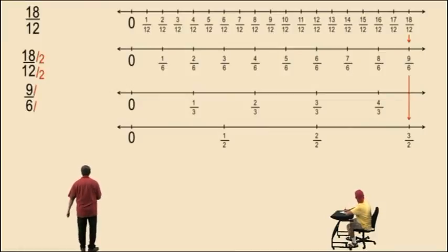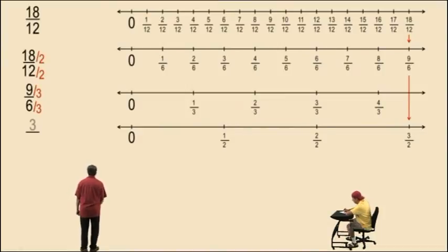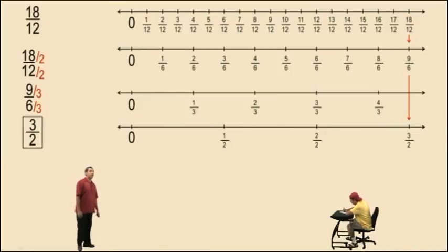But 9 sixths can still be reduced to 3 halves. That's because 9 and 6 have a common factor of 3. 3 divides evenly into both 9 and 6 and 9 divided by 3 is 3. 6 divided by 3 is 2 and now we get 3 halves. And 3 halves is reduced to lowest form because 3 and 2 have no common factors other than 1.